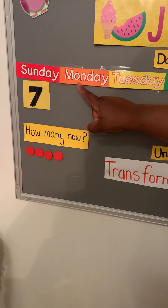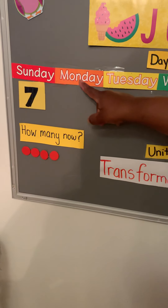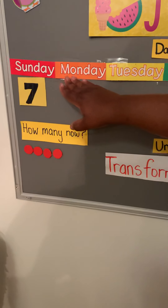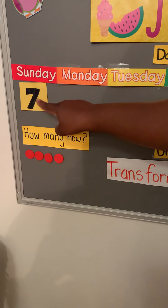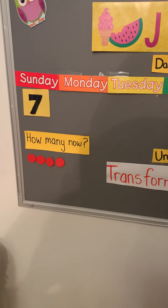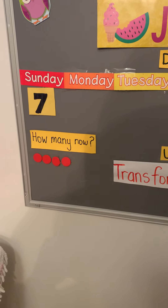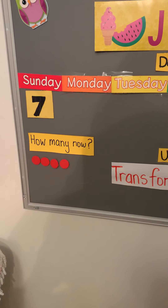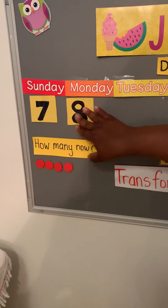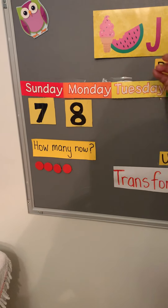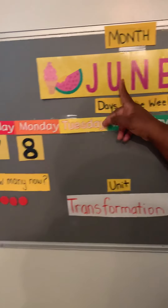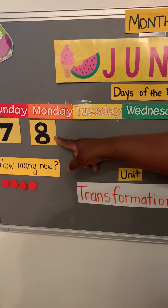So if yesterday was Sunday the 7th, today must be... Monday! Happy Monday, guys. If yesterday was seven, what's today's number? What comes after seven? Eight! Today is the 8th — the 8th day of June. So today is Monday, June 8th.